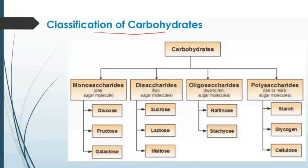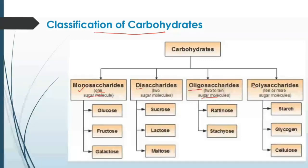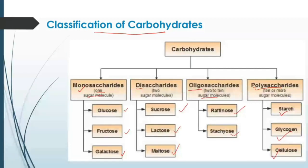Now let's move to the classification of carbohydrates. Based on the number of sugar molecules, carbohydrates are classified as monosaccharides, disaccharides, oligosaccharides, and polysaccharides. Monosaccharides contain only one sugar molecule; disaccharides contain two. Oligosaccharides contain more than two and up to ten sugar molecules; polysaccharides contain more than ten. Examples: monosaccharides — glucose, fructose, galactose; disaccharides — sucrose, lactose, maltose; oligosaccharides — raffinose, stachyose; polysaccharides — starch, glycogen, cellulose.